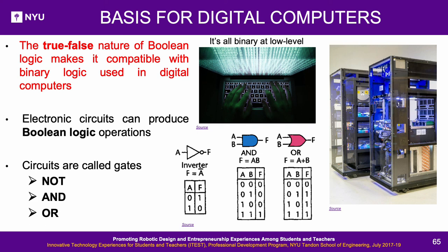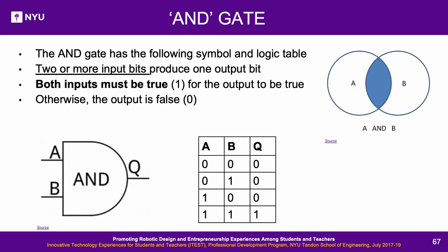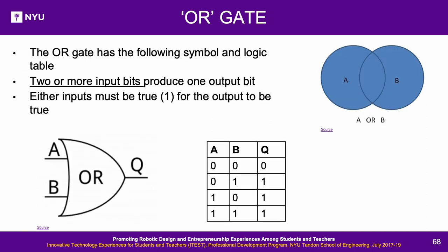NOT gate: The simplest gate is called an inverter or NOT gate. It has one bit as input and produces its opposite as output — if the input is 0 (false), the output is 1 (true), and vice versa. AND gate: Requires two or more input bits and produces one output bit. Both inputs must be true (1) for the output to be true; otherwise the output is false (0). OR gate: Requires two or more input bits. At least one input must be true (1) for the output to be true. Only if both inputs are false (0) is the output false.